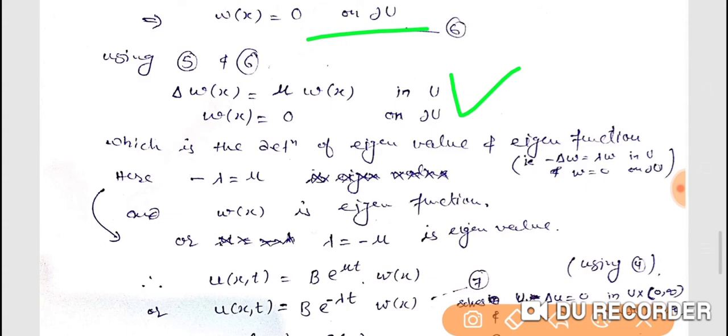So we have minus delta w equals minus mu w, which means lambda equals minus mu. Lambda is the eigenvalue and w is the corresponding eigenfunction.